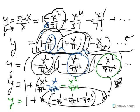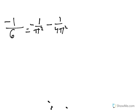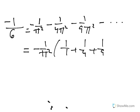This coefficient should equal this coefficient because there are two ways of expressing the same thing. So now I can say that negative 1 over 6, which is 1 over 3 factorial, is also equivalent to negative 1 over pi squared minus 1 over 4 pi squared minus 1 over 9 pi squared minus dot dot dot. If I factor out minus 1 over pi squared, I'm left with 1 over 1 plus 1 over 4 plus 1 over 9. The sum of the reciprocals equals negative 1 over 6. Multiply both sides by negative pi squared over 1.